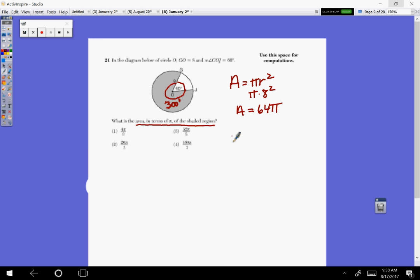So if we take 360 degrees to the area of the whole circle, 64 pi,